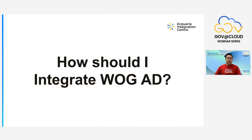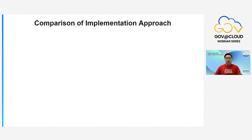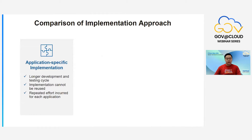How should you integrate with WOG AD? There are three approaches. The first is application-specific implementation, where each application integrates directly to WOG AD using its own custom implementation. This takes a long time and effort in development and testing, as implementing complex protocols like SAML involves trial and error to get the format, parameters, and cryptography right. This implementation cannot be directly reused across applications on different platforms or languages, meaning you may repeat this long cycle for each application.